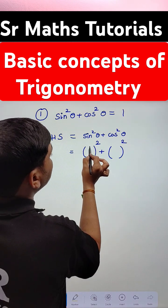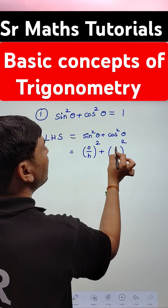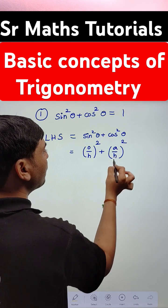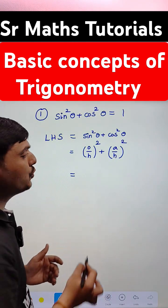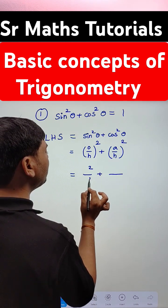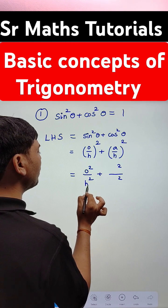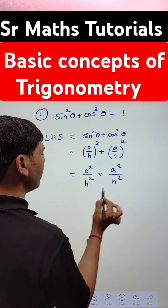Sine theta formula is opposite by hypotenuse. Cos theta formula is adjacent by hypotenuse. Both have powers of 2, so I represented the square of each in numerator and denominator: opposite square over hypotenuse square, adjacent square over hypotenuse square.